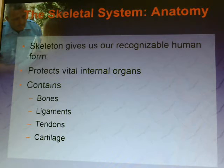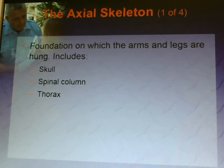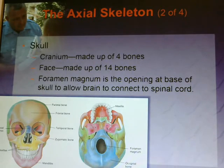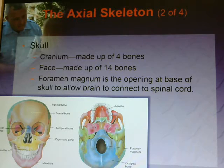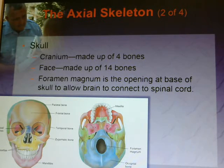The skeletal system gives us a recognizable human form. It protects our vital organs, contains bones, ligaments, tissues, and cartilage, and is the foundation on which our arms and legs are hinged. This includes the skull, spinal column, and thorax. The cranium is made up of four bones; the face is made up of 14 bones. The foramen magnum is the opening at the base of the skull which allows the brain to connect to the spinal cord.